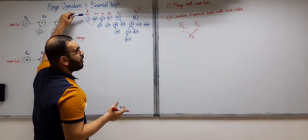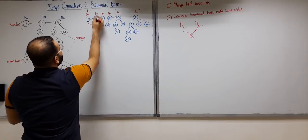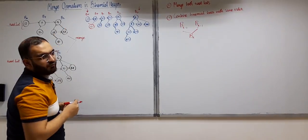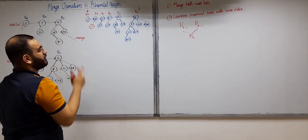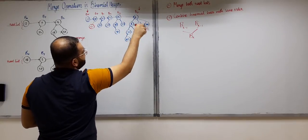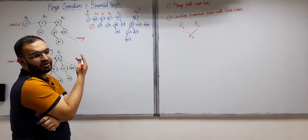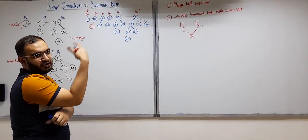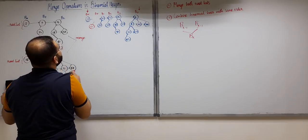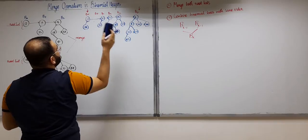The heap ordering property means the minimum element of a binomial tree is at the root. For example, if we combine the two B0 trees (roots 12 and 18), we must check which root is smaller. If we made 12 the child of 18, the root would be greater than a descendant, violating the property. Since 12 is smaller, we make 18 the leftmost child of 12, giving us a new B1.